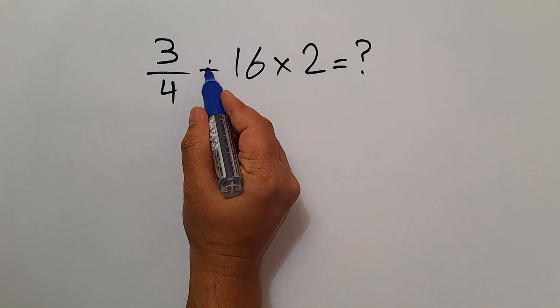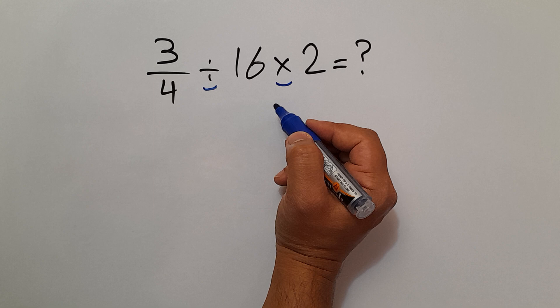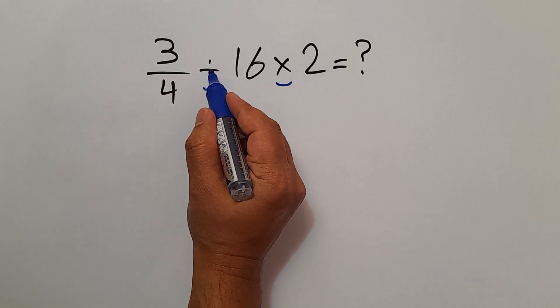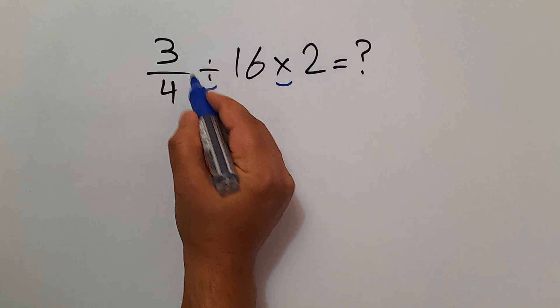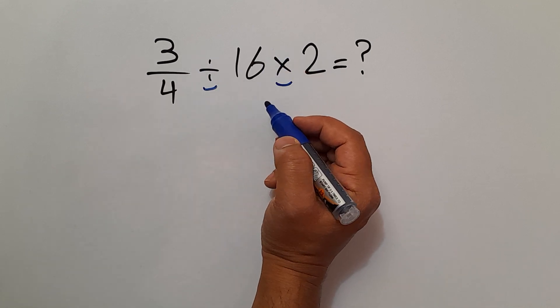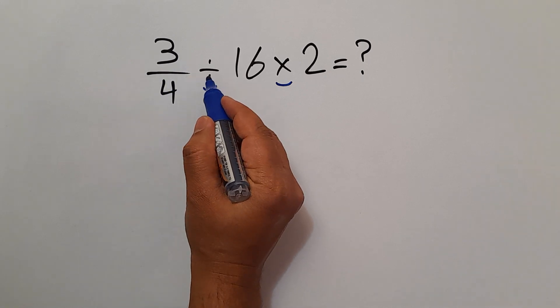Here in this expression we have this division and this multiplication. As we know, multiplication and division have equal priority and we have to work from left to right, so first this division and then this multiplication. 3 over 4 divided by 16.